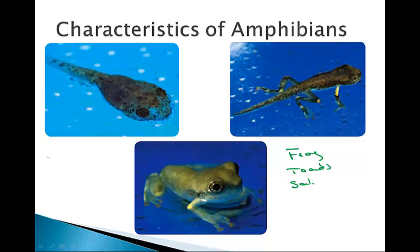Most amphibians have four legs, they have moist skin, they lack scales, and skin that allows for gas exchange. They also have lungs, and a double loop circulatory system.